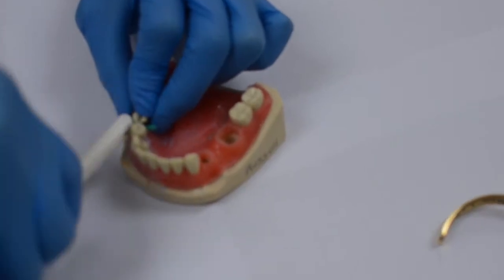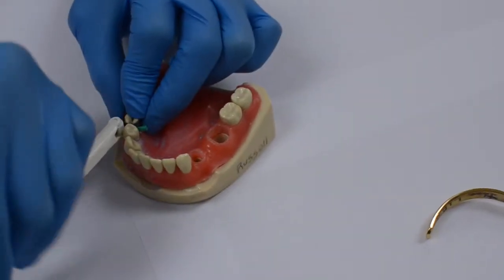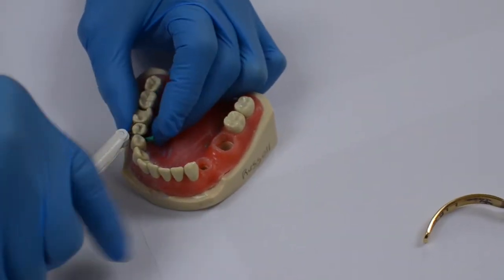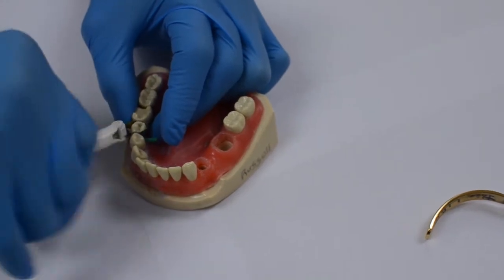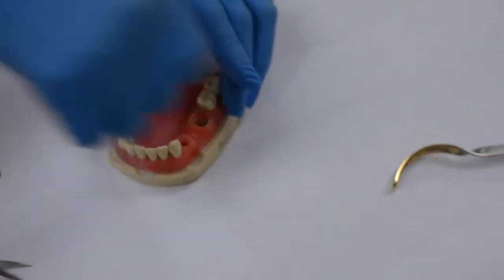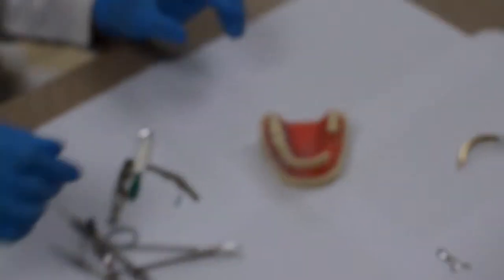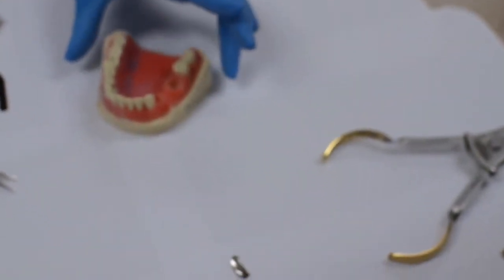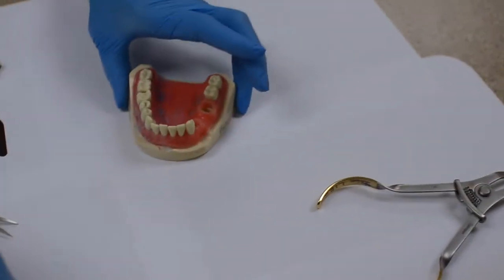Now we can use these for either amalgam or composite, but I'll be very honest with you, you can get the best, tightest contact with your Garrison segmental matrix system.